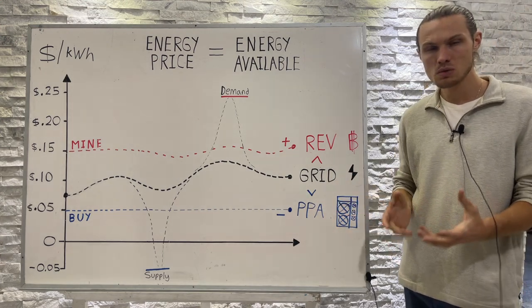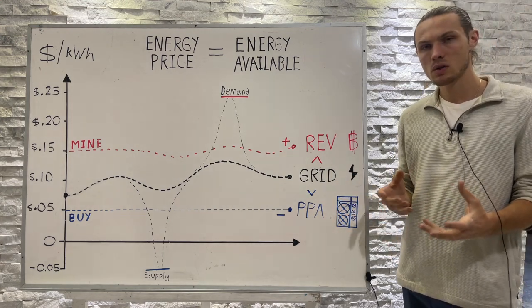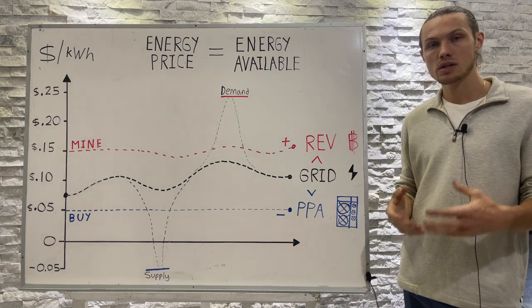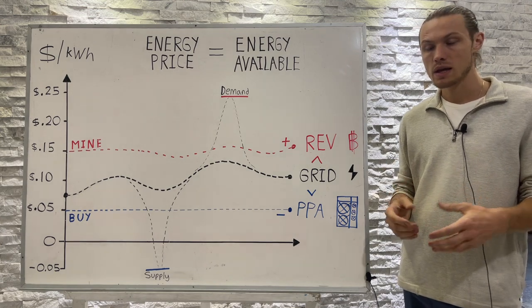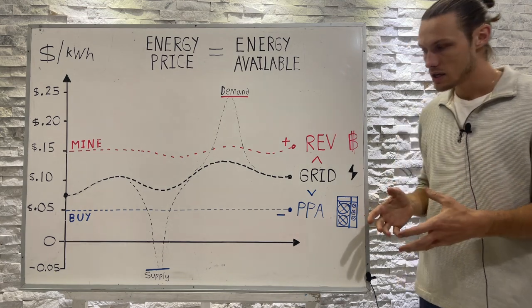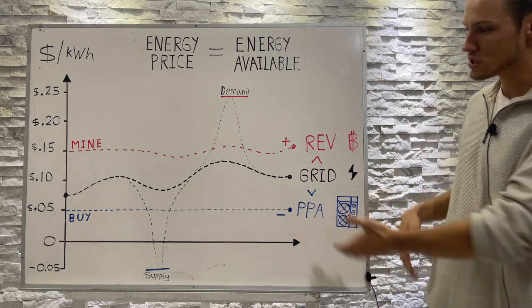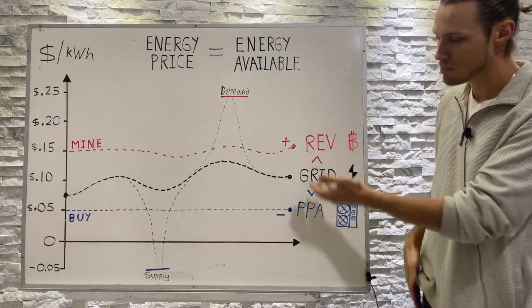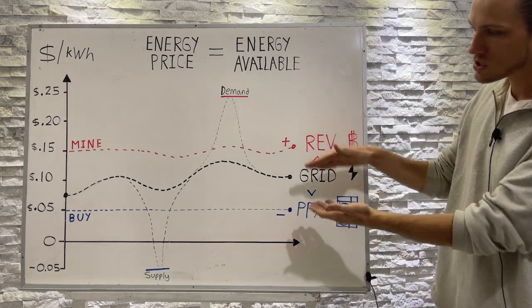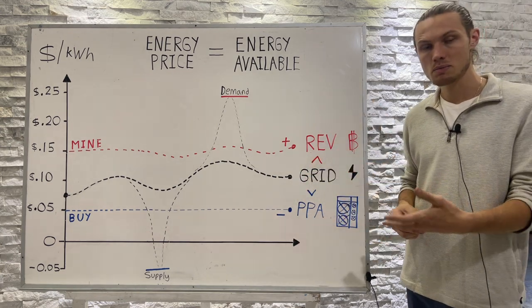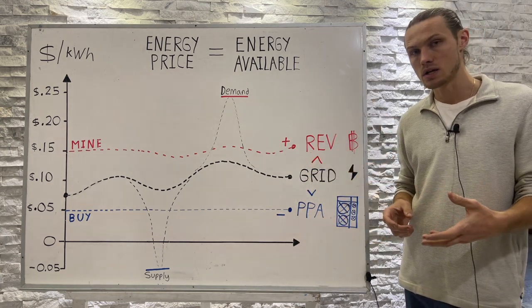That's why I consider Bitcoin mining to have an electron exchange rate and an energy liquidity — because miners will dynamically buy power and sell power, which stabilizes the grid from both the upside and the downside.